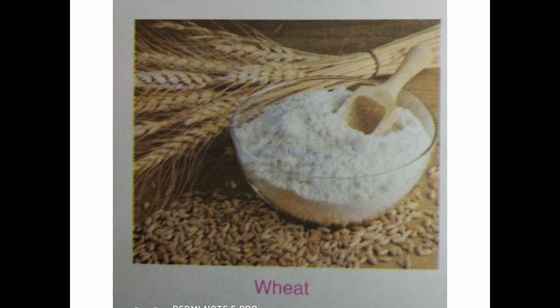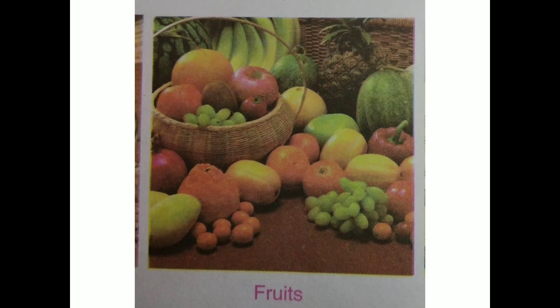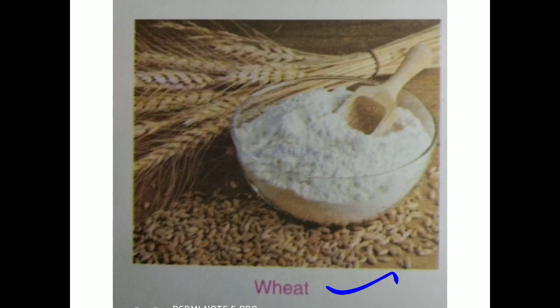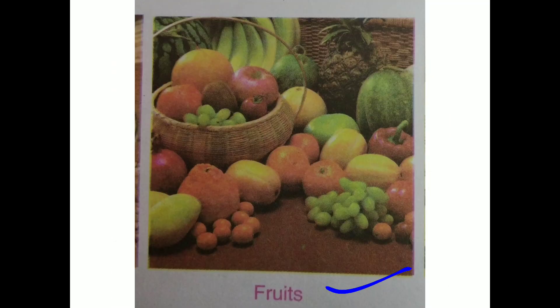Now, take wheat. You get wheat from the plant, then you make flour, and with that flour you make chapati, paratha and puri. This is the fruit which you get from the plants. Here we are using the seeds of the wheat plant. And in this we are using fruits of the plant, so the parts of the plant used here are the fruits.